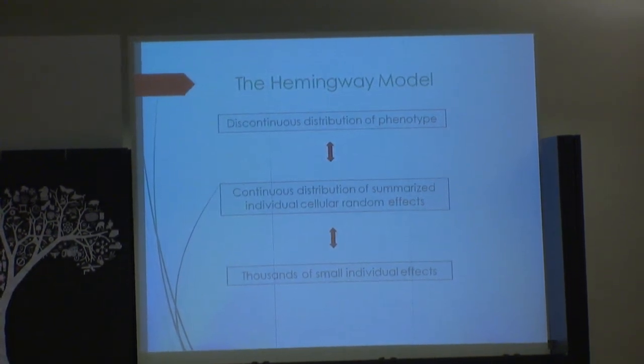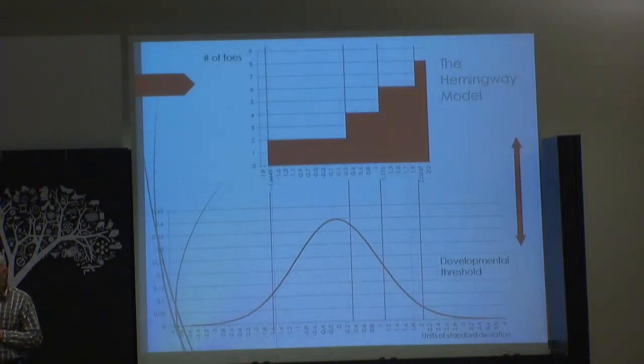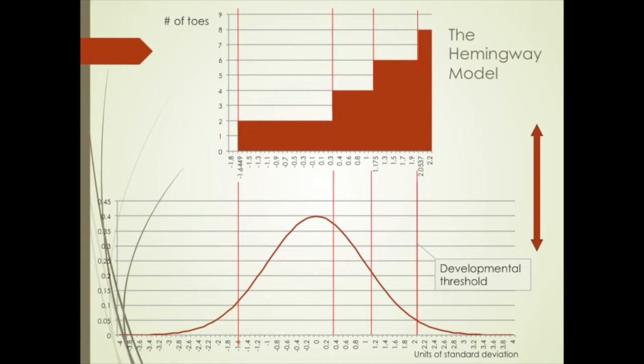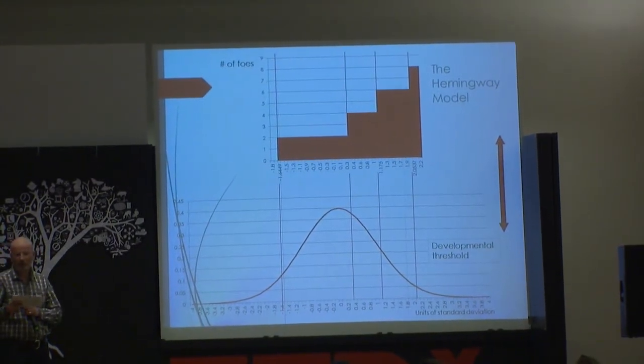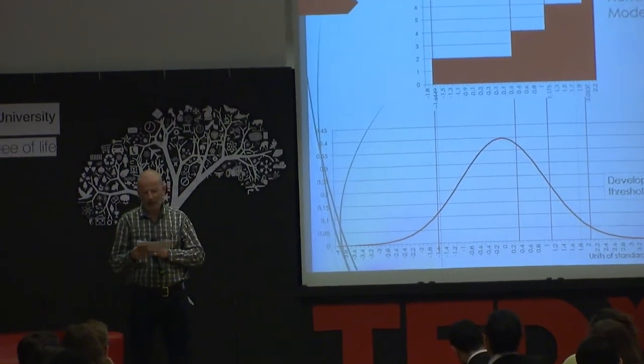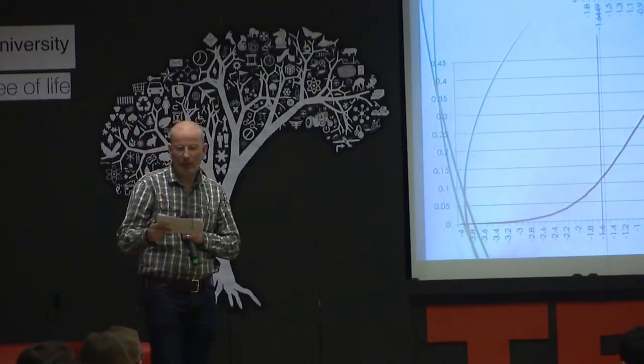Let's have a closer look at these three things. The Hemingway model explains the scenery between the molecular cellular level below and the phenotypic toe level above. On the molecular and cellular level, first there is the mutation. As a consequence of the mutation, there are thousands of small effects — all cellular random effects like changing gene expressions, changing sulfates, changing cell communications, et cetera. We can summarize all these small effects under a normal distribution. Why is this possible? The central limit theorem allows us to build means of these effects. The means are normally distributed — that's what the central limit theorem in statistics says. So we have a Gaussian distribution on the slide.